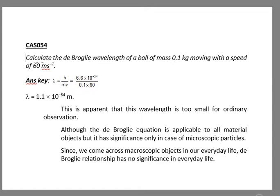Hello everyone, let's see our next example, which is example number 54. Calculate the de Broglie wavelength of a ball of mass 0.1 kg moving with a speed of 60 meters per second.